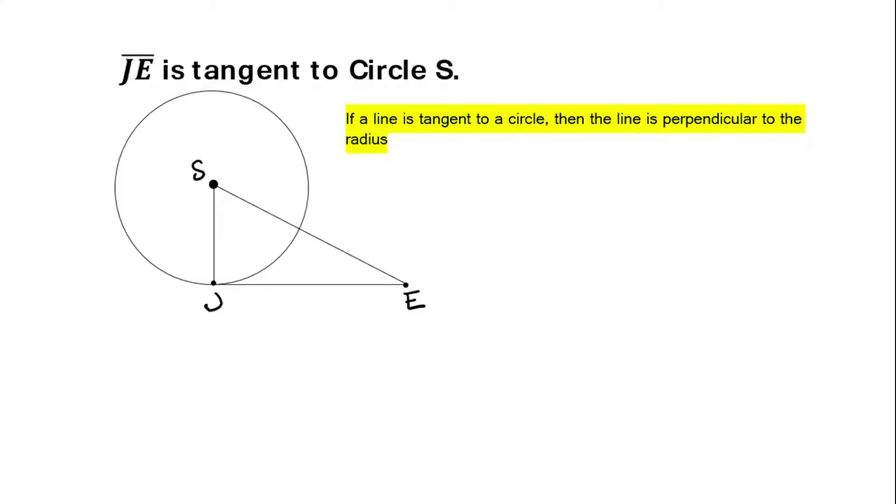Hey mathematicians! So one special theorem about circles and tangent lines states that if a line is tangent to a circle, then that line is perpendicular to the radius.